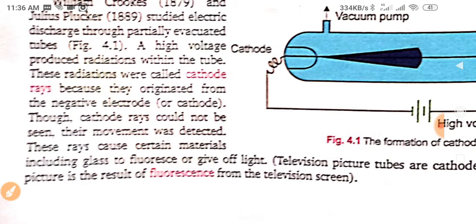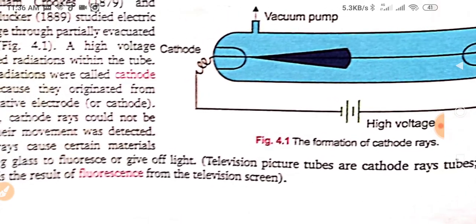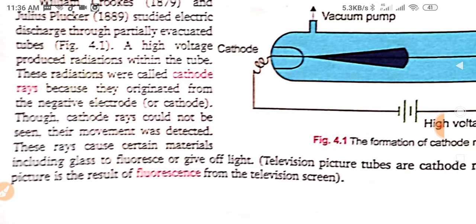Though cathode rays could not be seen, their movement was detected. These rays cause certain materials including glass to fluoresce or give off light. Television picture tubes are cathode rays tubes. Television picture is the result of fluorescence from the television screen. It is mainly television picture tube are the cathode tube. If you open old TVs, you can see easily cathode tube within them.